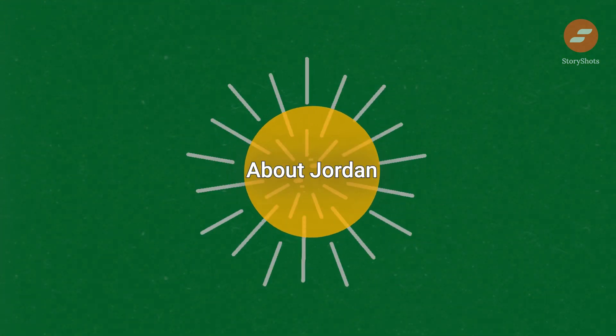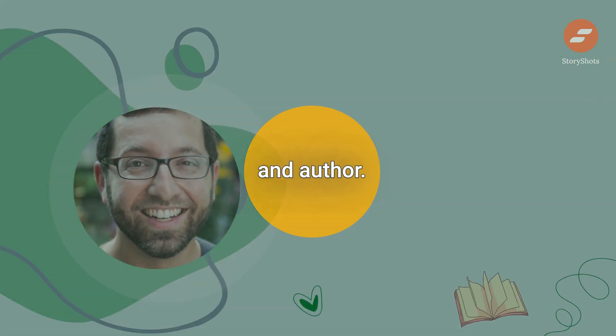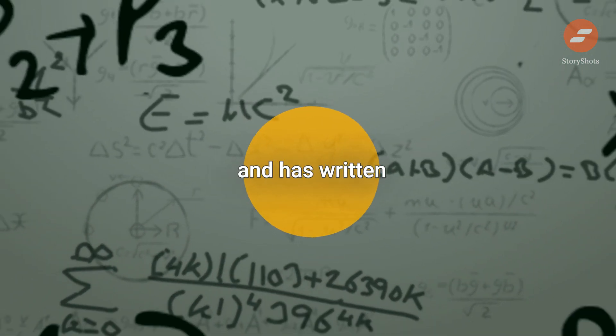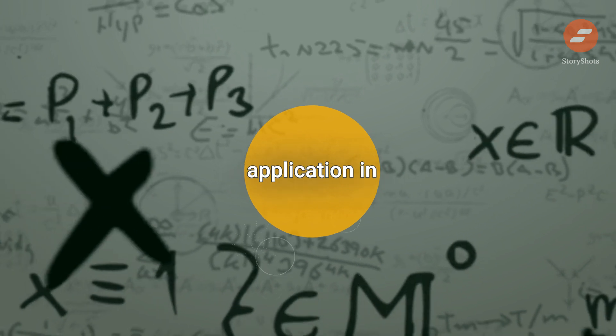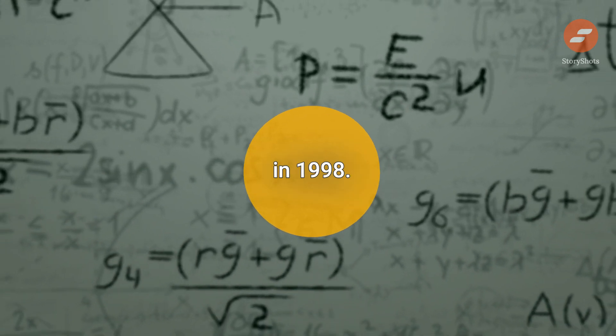About Jordan Ellenberg. Jordan Ellenberg is a mathematician and author. He is a professor at the University of Wisconsin-Madison and has written several books on math and its application in various fields. He received his Ph.D. in math from Harvard University in 1998.